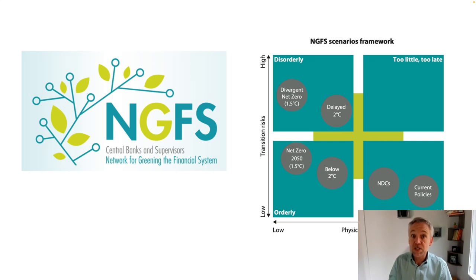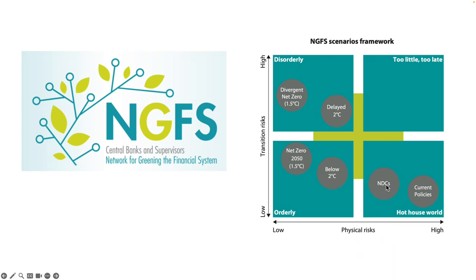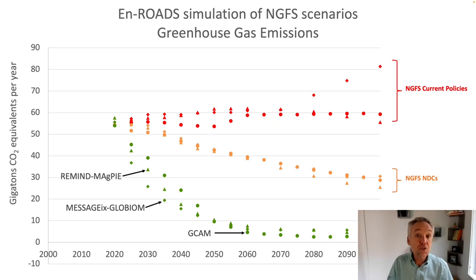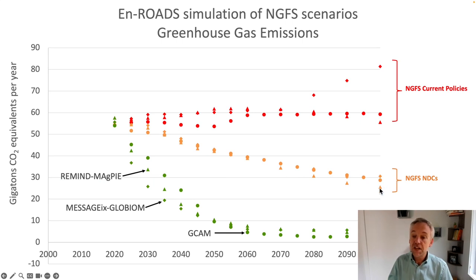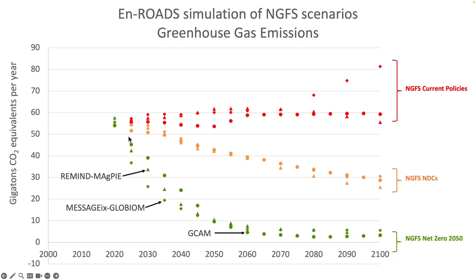This gets more relevant as we recreate En-ROADS for the other reduction scenarios — scenarios in which emissions are reduced. There are two such scenarios: the NDCs, where the world follows the nationally determined contributions pledges to the Paris Agreement, and net zero 2050. Here are those results for the NGFS scenarios. The orange NDC scenario shows a gentle decrease in overall greenhouse gas emissions, while the NGFS net zero shows a steeper drop.